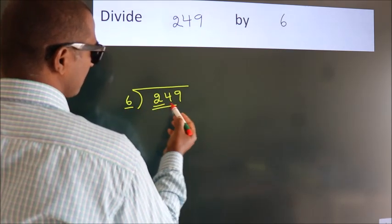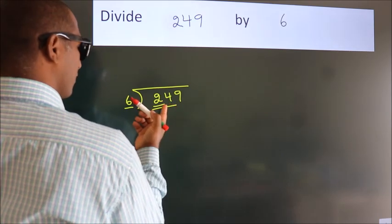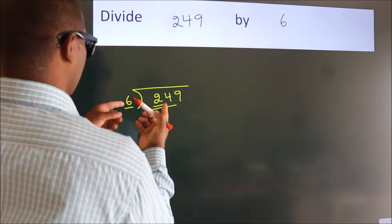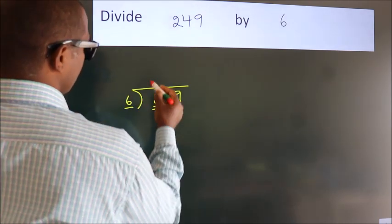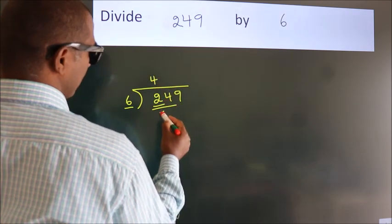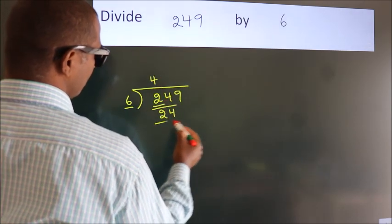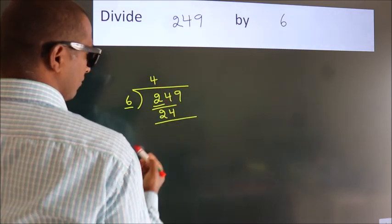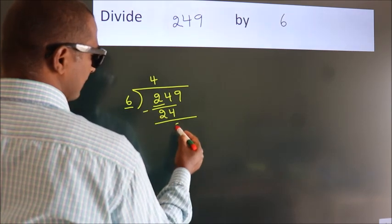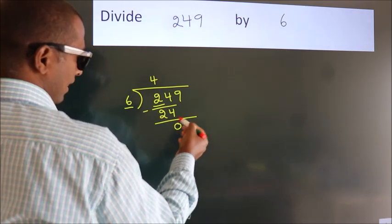When do we get 24 in 6 table? 6 fours 24. Now we should subtract. We get 0 after this.